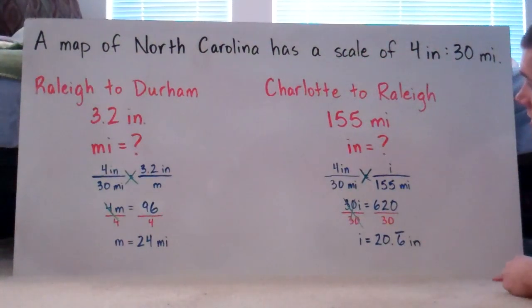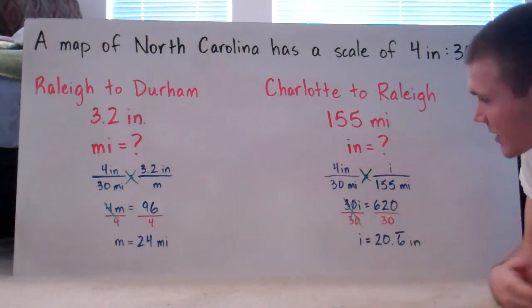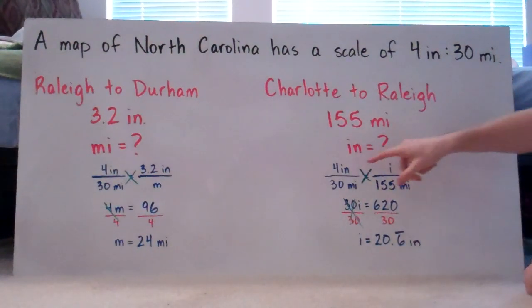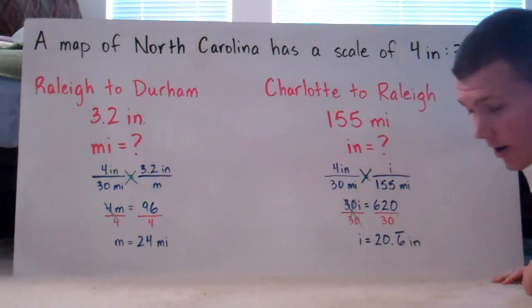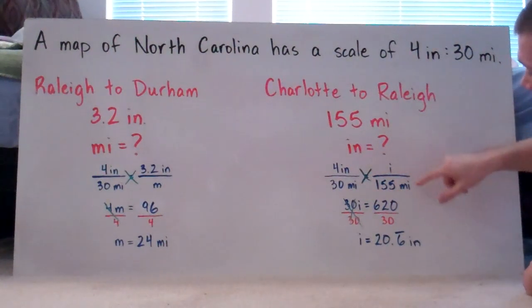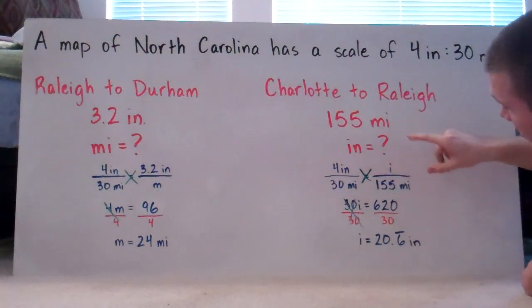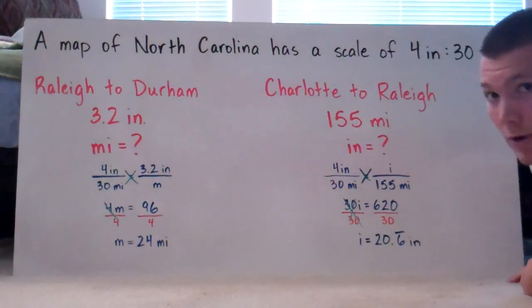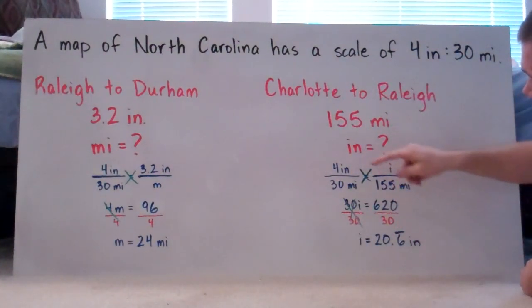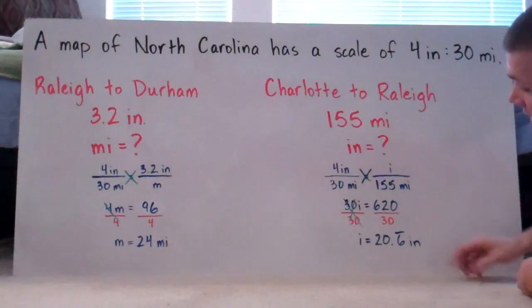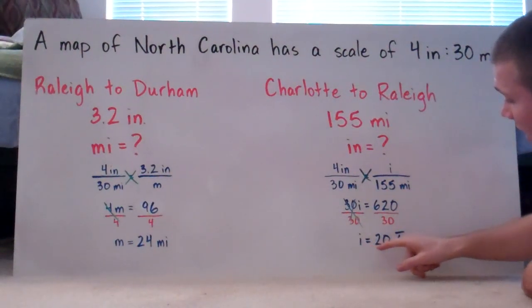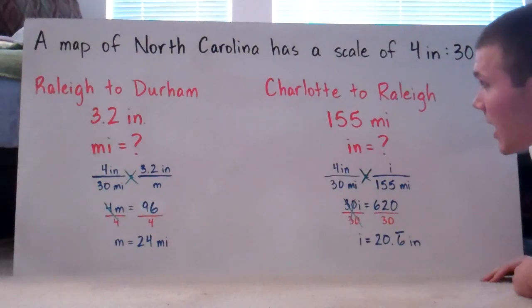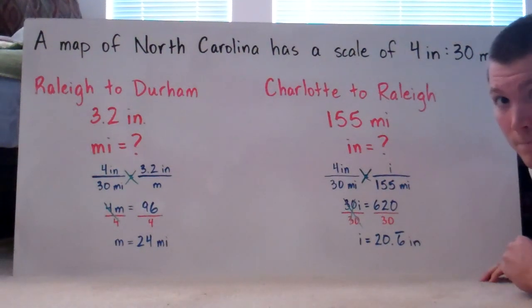Next, Charlotte to Raleigh is 155 miles apart, but we want to know how many inches apart that is on the map. Using the same ratio — four inches over 30 miles — set equal to the new ratio with 155 miles on the bottom and i (inches) on top. Cross multiplying: 30 times i is 30i, and 4 times 155 is 620. Dividing both sides by 30, i equals 20.6 repeating, or 20 and two-thirds inches on the map.